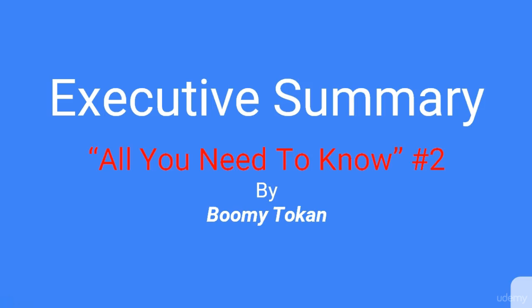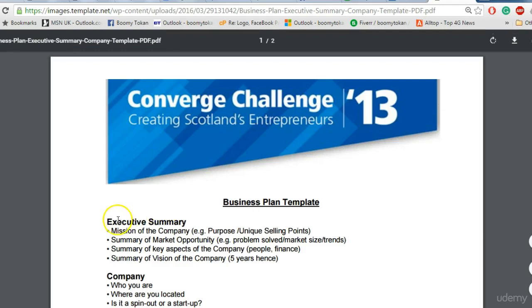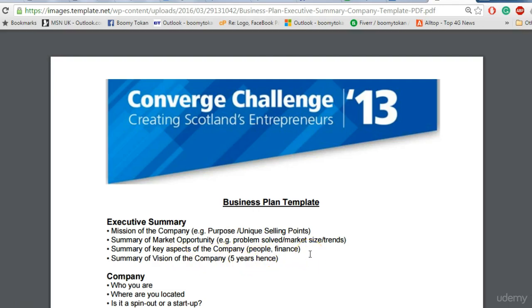Let's dive in and look at two examples right now that you can find of Executive Summaries. In this particular example, it's from Coverage Challenge — Creating Scotland's Entrepreneurs — and it gives us what the Executive Summary right here should cover. It talks about the mission of the company, its uniqueness and selling points, then the Summary of the Market Opportunity, Summary of Key Aspects of the Company, and then the Summary of the Vision of the Company. It's quite a small Executive Summary type of template we're looking at here.